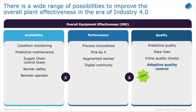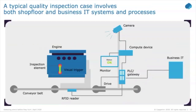One important measure of plant effectiveness is OEE — Overall Equipment Effectiveness — which is a key KPI to measure a plant's performance. It is calculated as the product of availability multiplied by performance multiplied by quality. While there are various solutions to address each area, today's discussion mainly focuses on adaptive quality control and what we mean by that when coming up with a collaborative visual quality application.